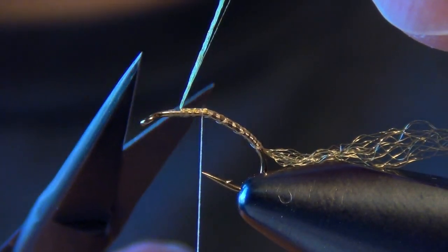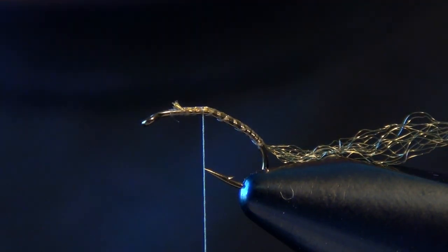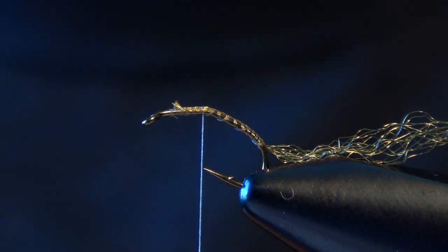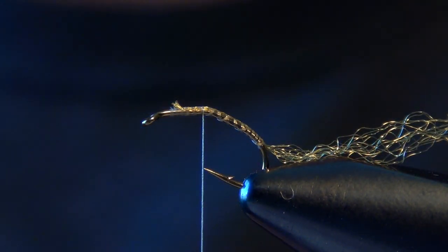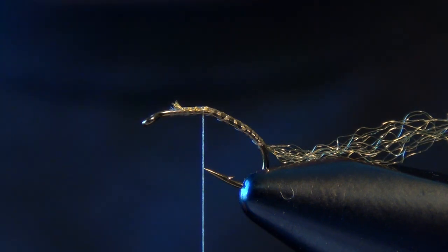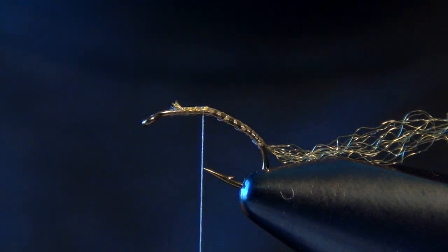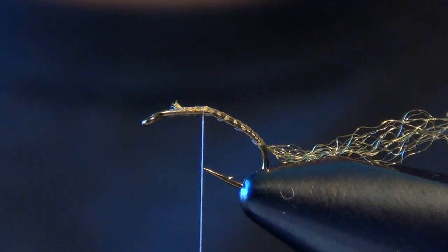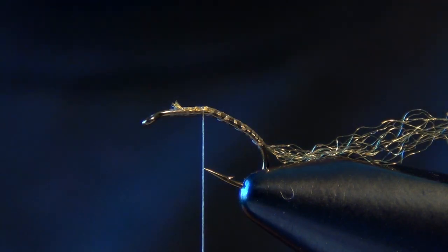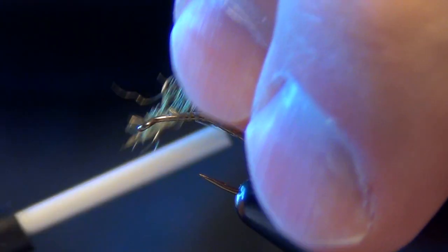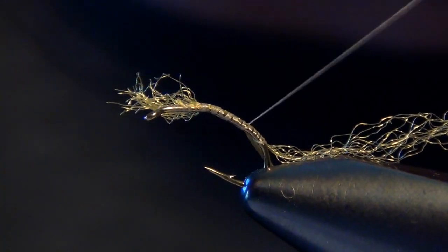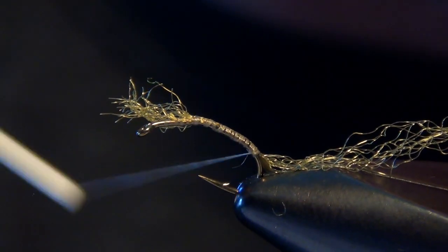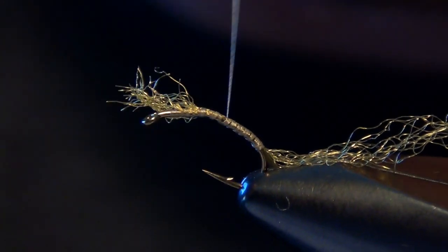Now we're ready for the body, which is going to be a more generous clump of our Zelon, same color, kind of a golden olive or a golden yellow color. I'd say the clump is probably 25 maybe 30 or so fibers. Still don't want to overdo it but you definitely need more for this portion of the fly. We're just going to take that clump and tie it down along the side of the shank of the hook. I'll spiral my thread forward and we can trim out the butt ends.